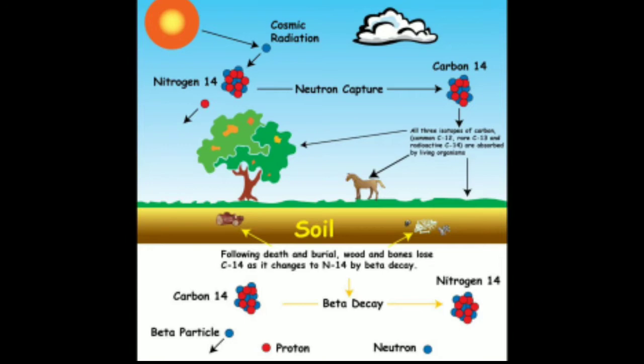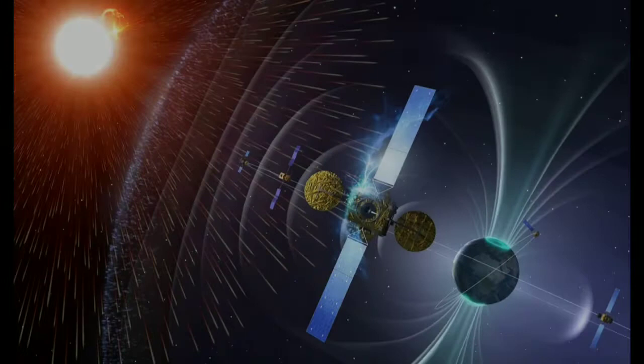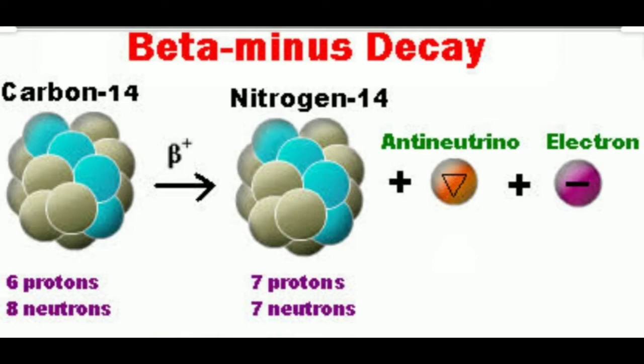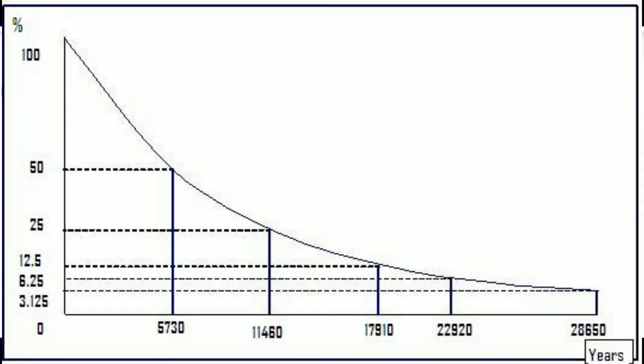The amount of C14 in the atmosphere and therefore in plants and animals has not always been constant. For instance, the amount varies according to how many cosmic rays reach earth. This is affected by solar activity and the earth's magnetic field. Luckily, we can measure these fluctuations in samples that are dated by other methods. From these records, a calibration curve can be built. Following death and burial, wood and bones lose C14 as it changes to nitrogen-14 by beta decay.